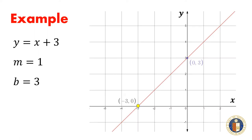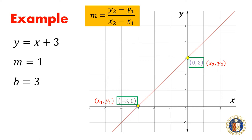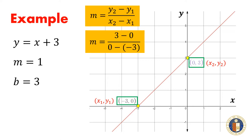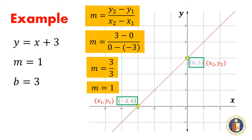If we take the point (-3, 0) to be our (x1, y1) and the point (0, 3) to be our (x2, y2), the slope would be m equals 3 minus 0 all over 0 minus negative 3. This is equal to m equals 3 over 3, or simply 1. The graph of the equation intersects the y-axis at point (0, 3).